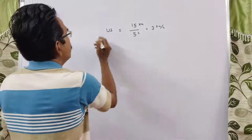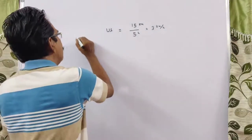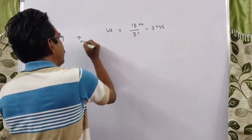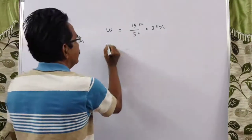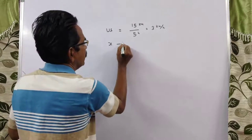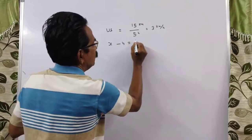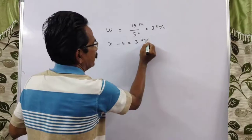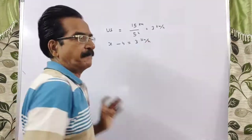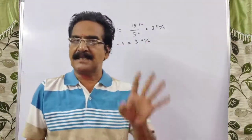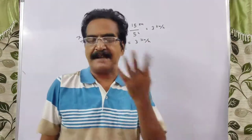Let the still water boat velocity be X and stream velocity be Y. Then upstream velocity is X minus Y, and downstream velocity means X plus Y.